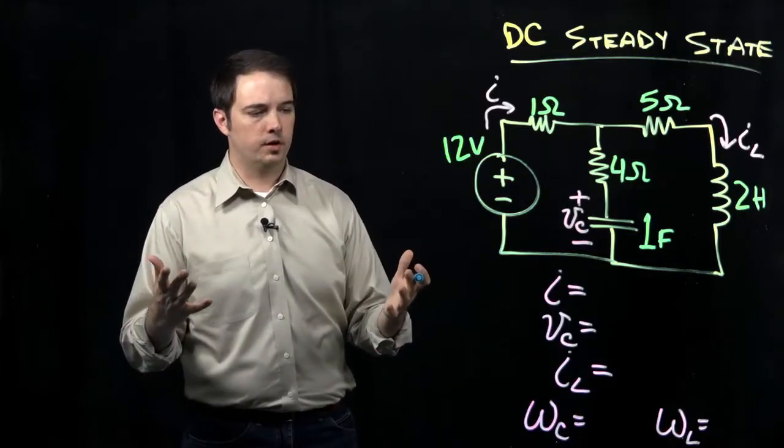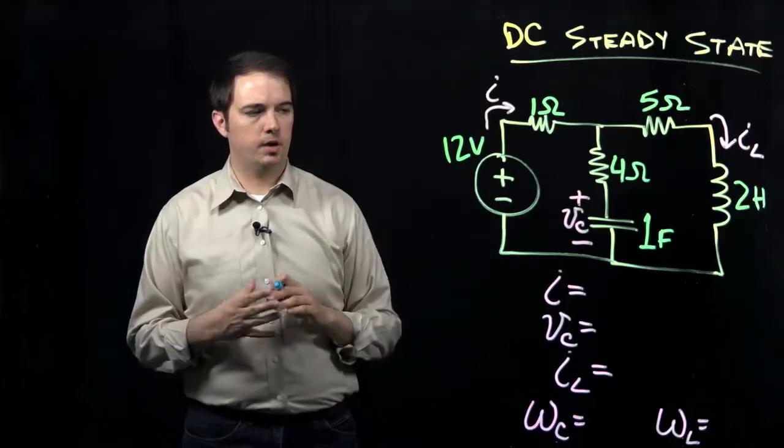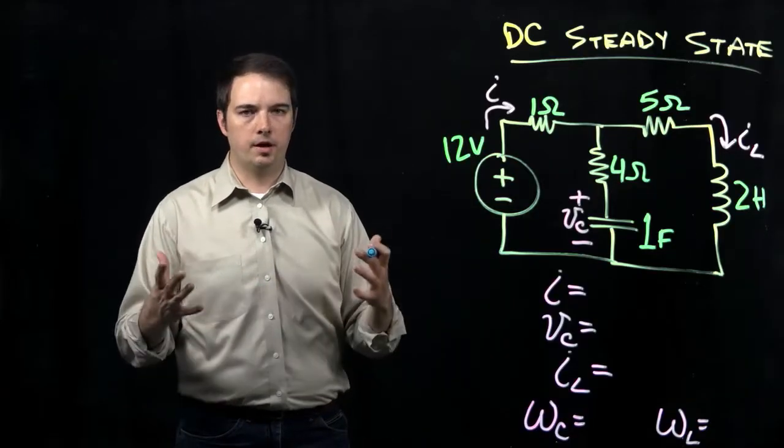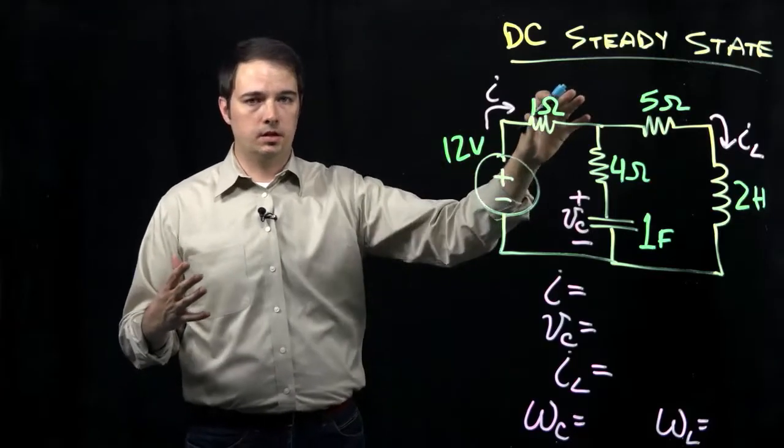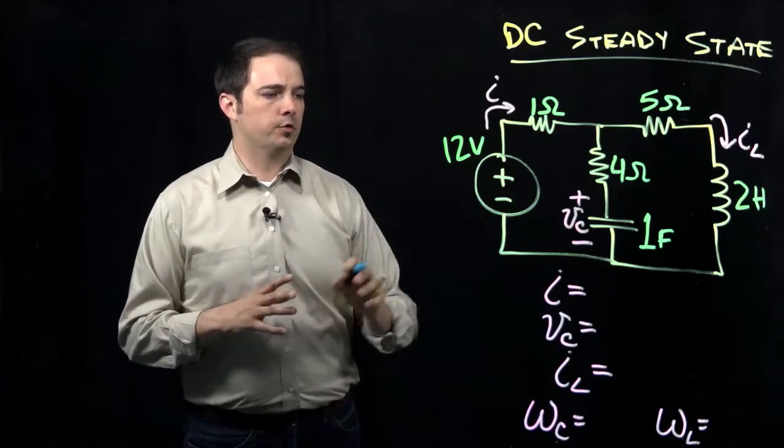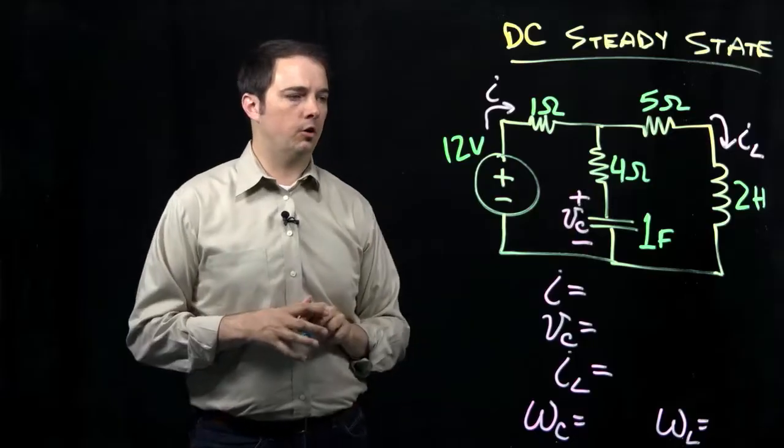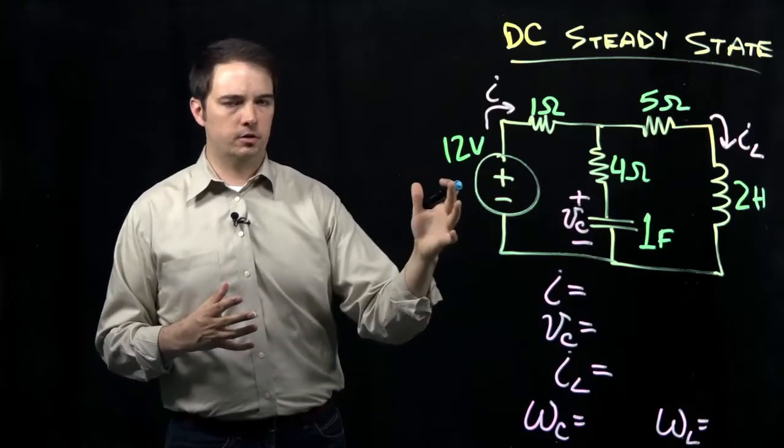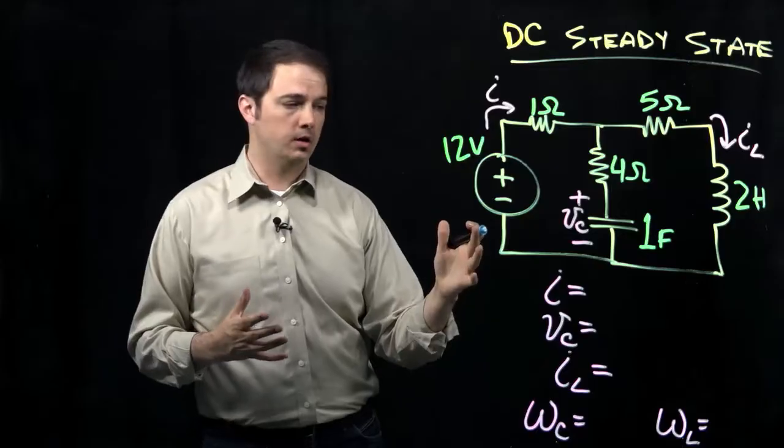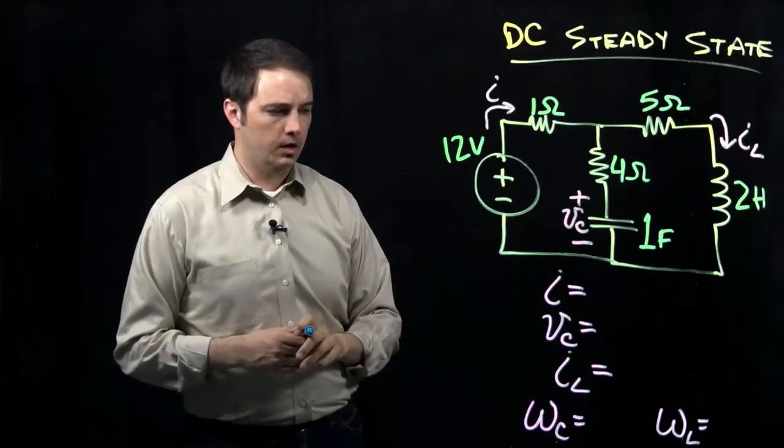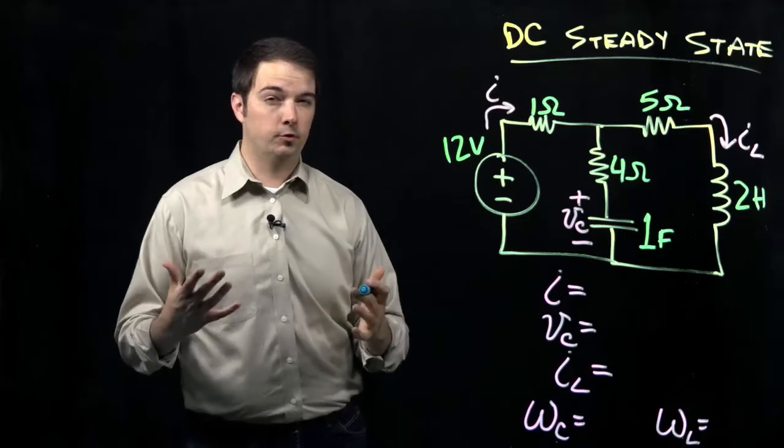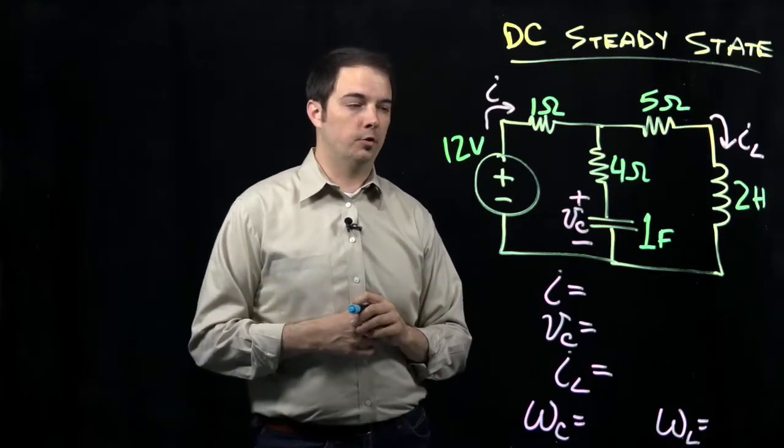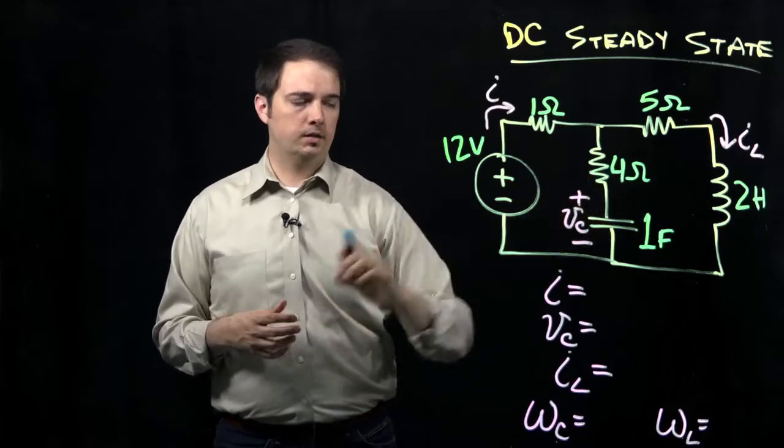So the first step to being able to solve for these variables would be to apply the principles that we know of what it means to be at the DC steady state condition. For the capacitor, recall that if we're at the DC steady state condition, the capacitor can be treated more or less like an open circuit, because the current in the capacitor is related to any changes in voltage, and because there's no change in voltage, there can't be any current flow through there.